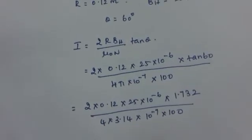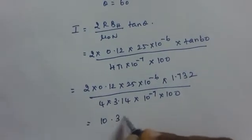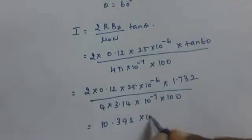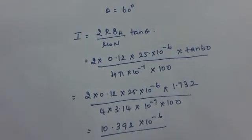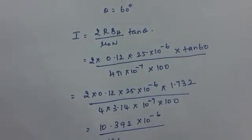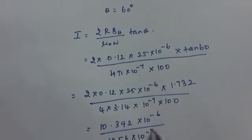If you multiply the numerator, you will be getting it as 10.392 into 10 raised to minus 6. If you multiply the denominator, you will be getting 1256 into 10 raised to minus 7.